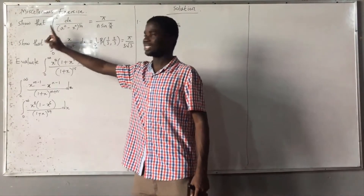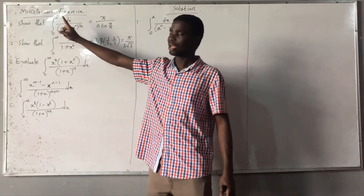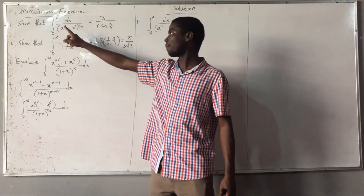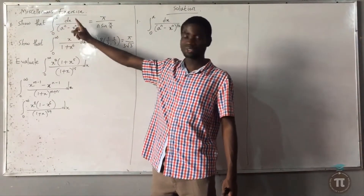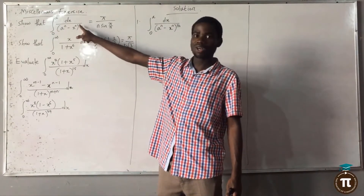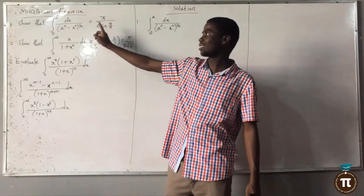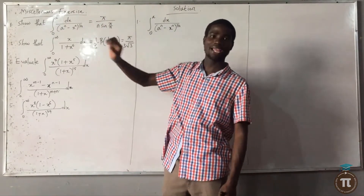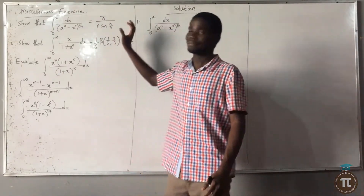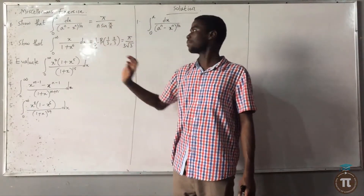We have shown that the integral from 0 to a of ds over (a^n minus s^n) raised to the power of 1 over n is equal to π over n·sin(π/n). This is the first one we are going to be looking at today.